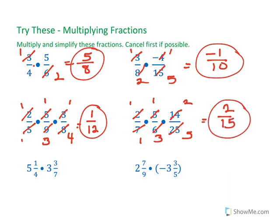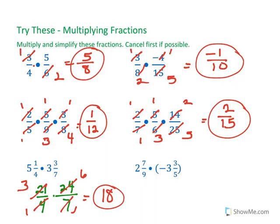Here I have to turn these into improper fractions. 5 times 4 is 20, so I have 21 fourths times, wait a minute, 24 over 7. And then, when I cancel, I get 18 over 1, or simply 18.